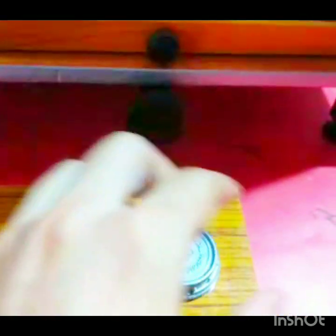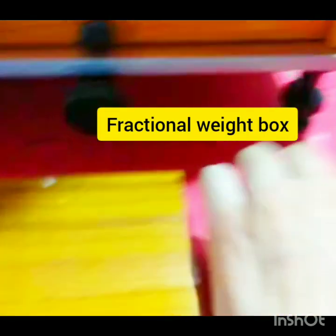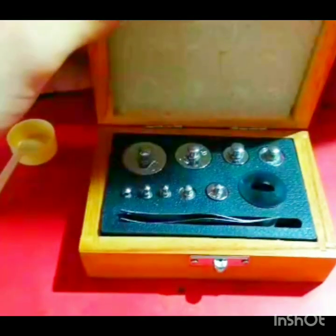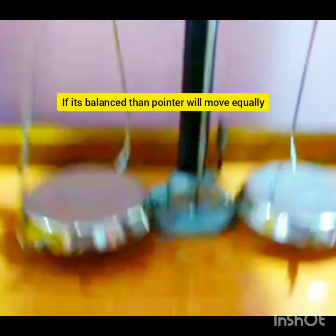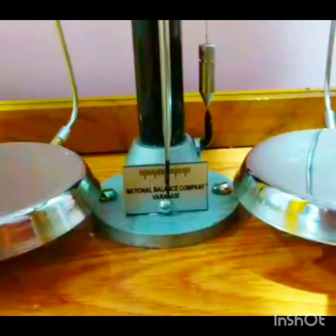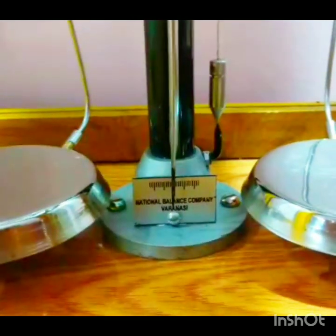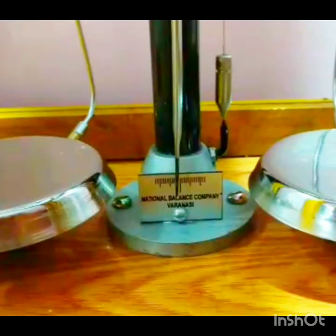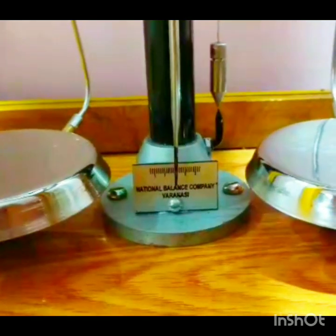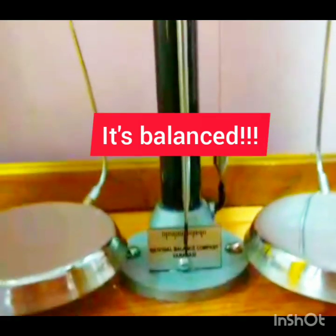You will need a fractional weight box and a standard weight box. First, to see whether your balance is balanced or not, count oscillations: left side one, right side one. We can see our balance is balanced.